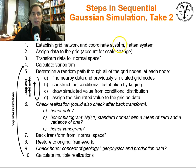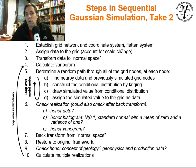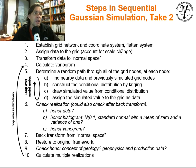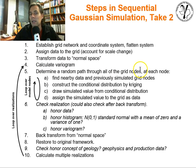Establish a grid network, coordinate system, flatten the system, assign the data to the grid, account for any type of scale change if there is a scale change between the data and the size of the grid cells. This has been just like kriging or any type of estimation method so far. Transform the data to normal space — Gaussian space. Now you can calculate the variogram. Determine a random path through the grid nodes that don't have data. Find the nearby data — go to the first location, loop over the nodes.